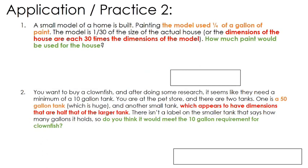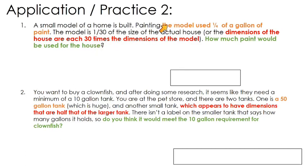Now let's look at some slightly more real-world problems. A small model of a home is built, and when you paint your little model, you used a quarter of a gallon of paint. Since we're talking about painting something, we're probably talking about surface area. The model is one-thirtieth the size of the actual house, or you could say the dimensions of the house are each 30 times that of the model. How much paint should you use for the house? We have a certain amount of surface area, and then a dilation creating a full-sized house that's 30 times greater, and we want to know the surface area we need to paint on the new house.